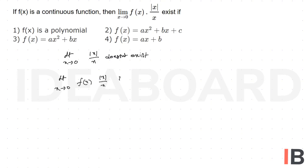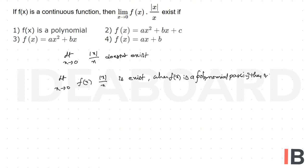...f of x is a polynomial passing through (0, 0). The correct answer is the third option.